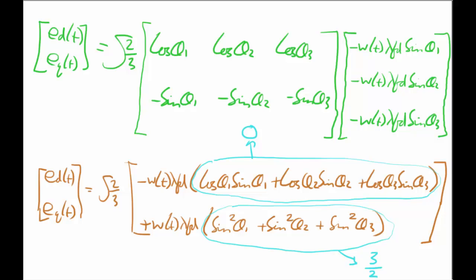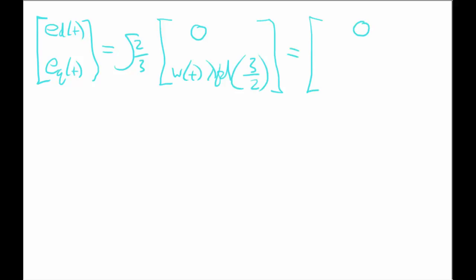So just using the standard abc to dq transformation matrix as I'll be showing you here. So this would be the g. And instead of having ea, b and c, we know that eb is the exact same as ea except 120 degrees out of phase. And we know it's going to be the same except 240 degrees out of phase for the ec. And we know that this is the standard equation for the flux linkage or the induced voltage, where lambda fd is the induced or the flux linkage.